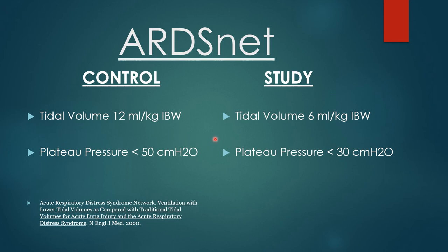The ARDS-NET results showed the control group had a much higher mortality than the study group — a significant difference. Since then, we've all been instructed to follow the ARDS-NET strategy: 6 mL/kg and plateau pressures less than 30. Interestingly, the patients with the best blood gases were in the control group — they had the worst outcomes but the best blood gases. This tells us we need to focus on protecting the patient from the ventilator rather than trying to normalize blood gases. We need to treat the patient, not the patient's blood gas.